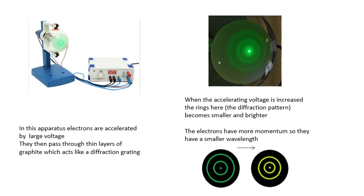We can investigate that — this should have been demonstrated to you. In this tube here, very fast electrons: you accelerate electrons with an electron gun and then pass them through graphite, which acts like a diffraction grating. You get maxima — you get rings on the fluorescent screen at the end of the tube. When the electrons hit it, they produce light, and we get rings — that is a diffraction pattern. What's interesting is if you turn up the voltage, the rings get smaller. They get brighter because there are more electrons hitting the screen with more energy. The rings get smaller because they're traveling faster, so they have more momentum and therefore a smaller wavelength. The more momentum they have, the smaller their wavelength.